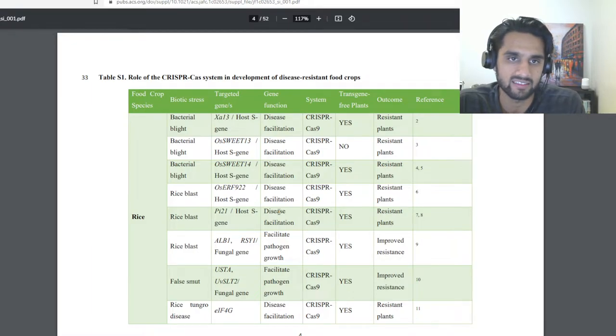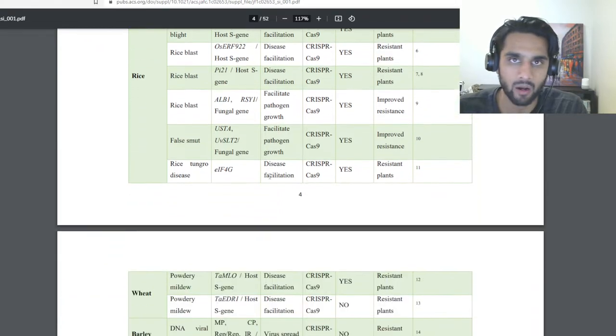But what I wanted to put your attention to, to this link here, this paper, which I will link in the comments below just as usual, is table S1, role of CRISPR-Cas in development of disease-resistant fruit crops. Look at this. Different rice being the species. Different biotic stress. Look at the targeted gene. They can tell which targeted gene using which system is efficient to sort of edit or to target that gene and basically make it more resistant. And I just find that completely mind-boggling.